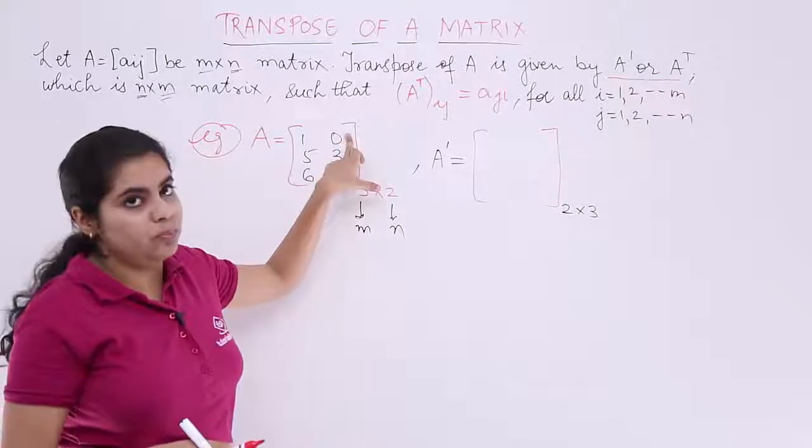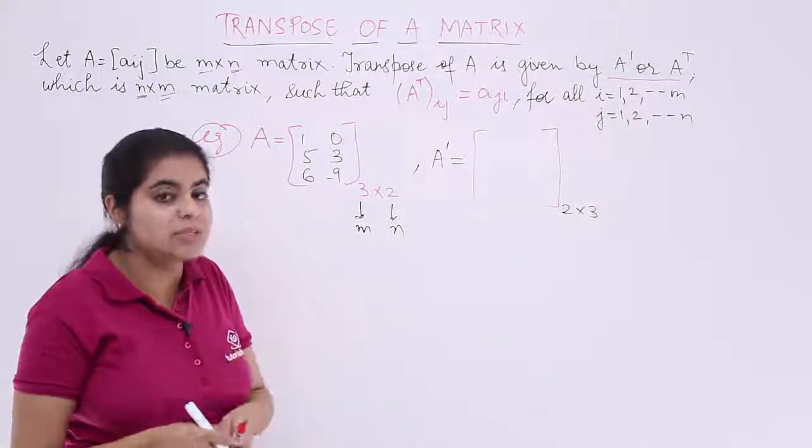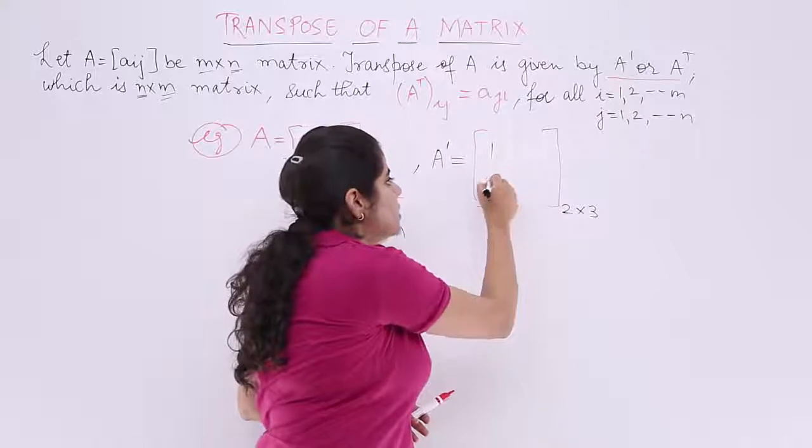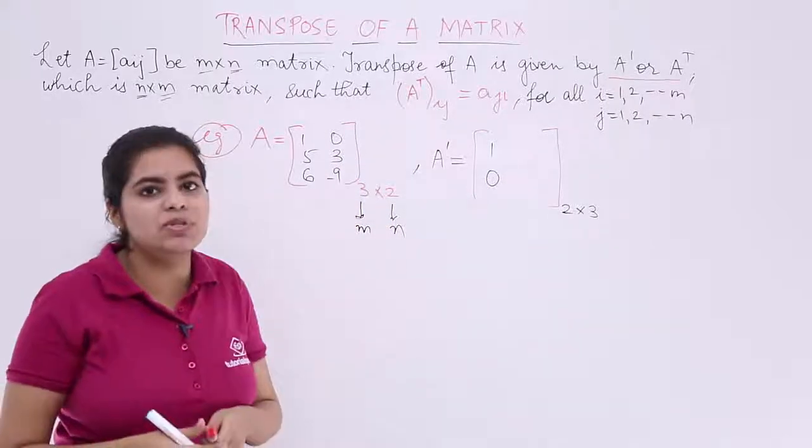Now 1, 0 is the first row. But now what happens, the story changes: 1, 0 becomes your first column because it is the transpose matrix.